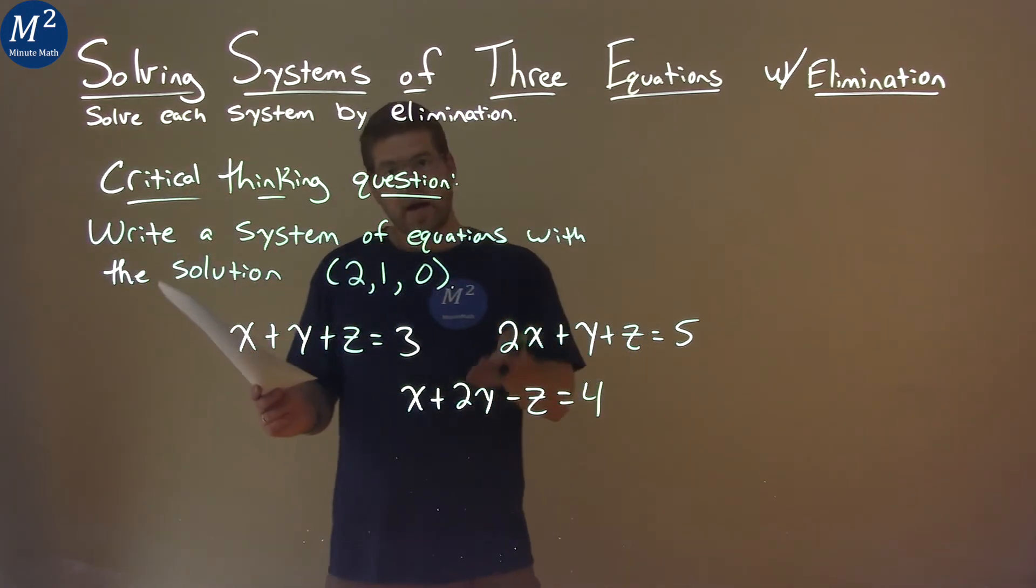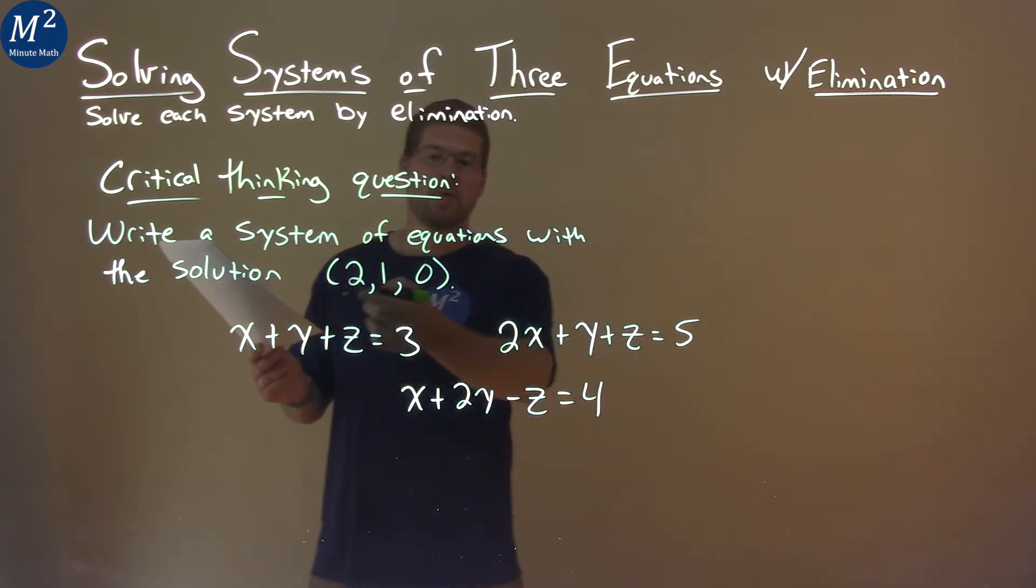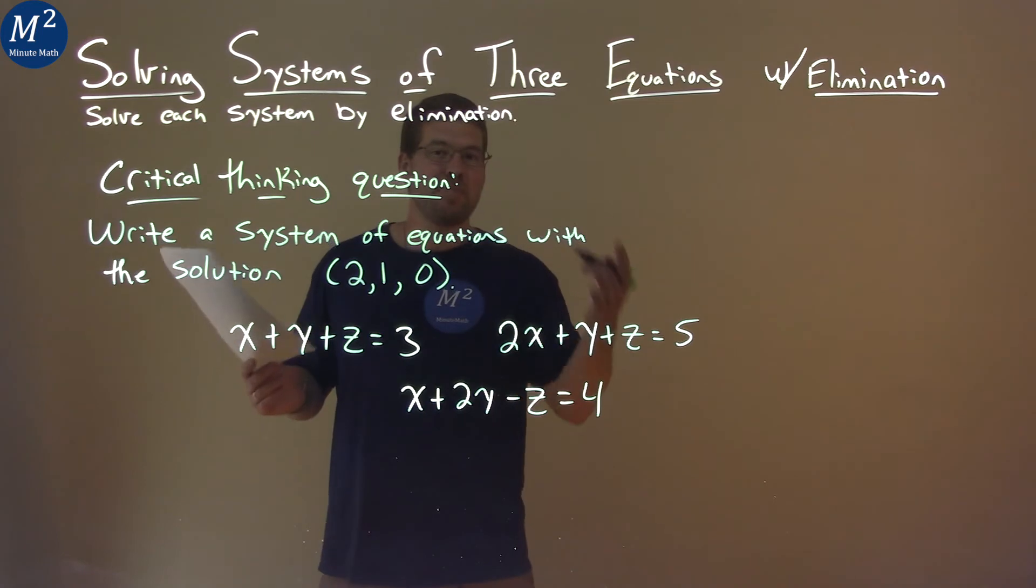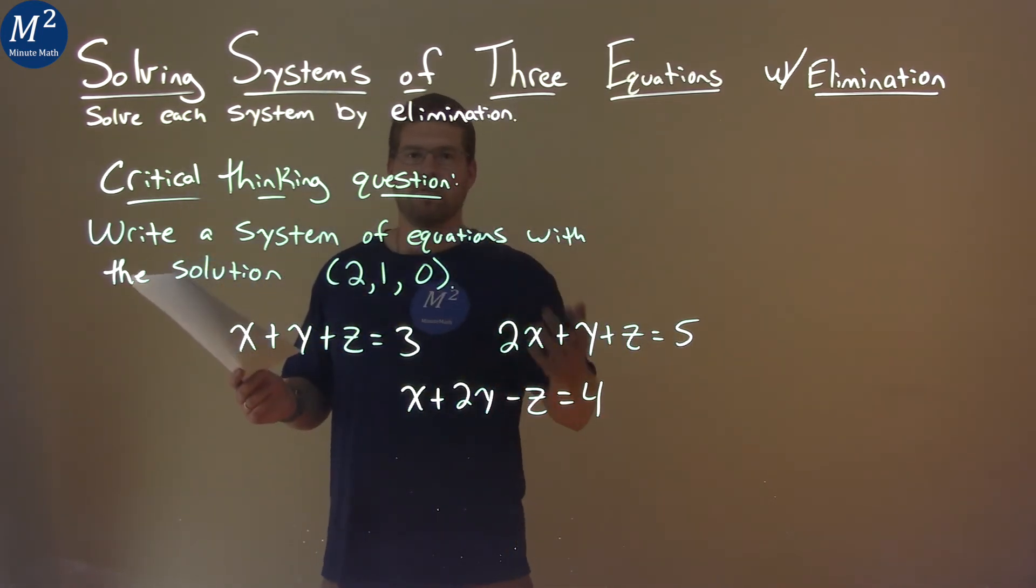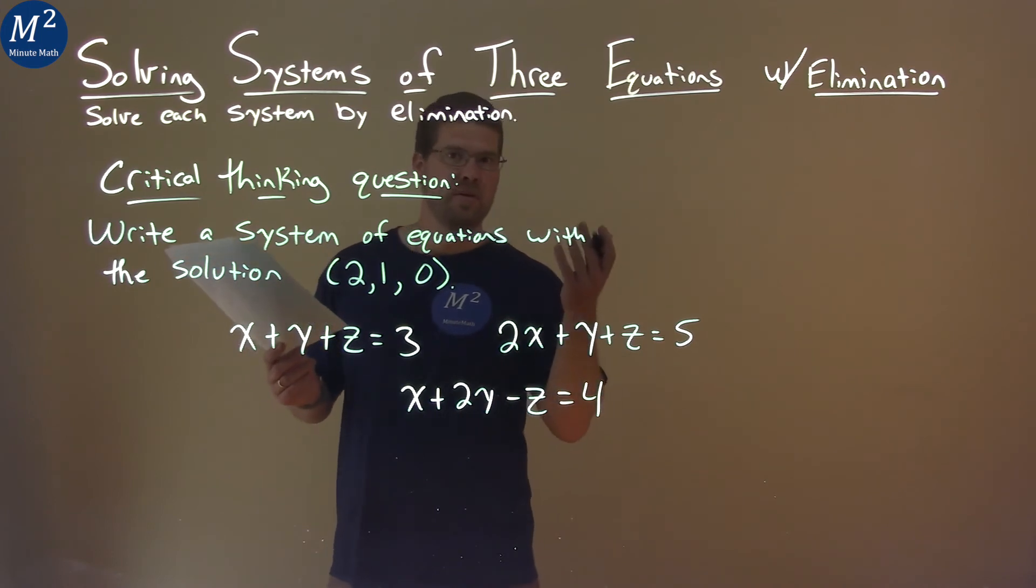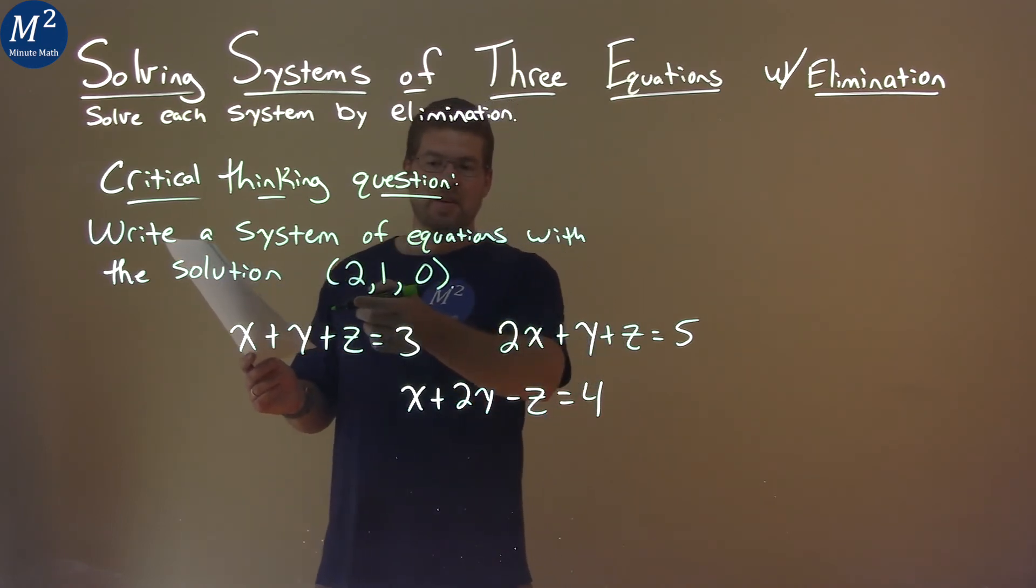And now I have 3 equations that involve x, y, and z, and I know I can solve them that will give a solution. Again, there's many ways that you could do this. You could come up with different equations by the same process here. Just make sure that final number adds up, right, and you have a new equation. But there are 3 distinctly different equations here, and all of them have a solution of 2, 1, 0.